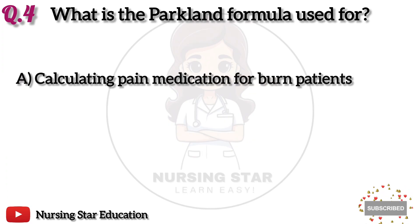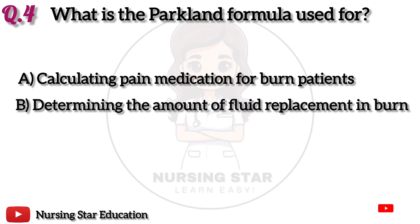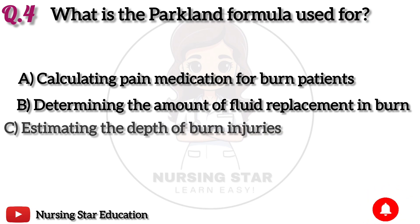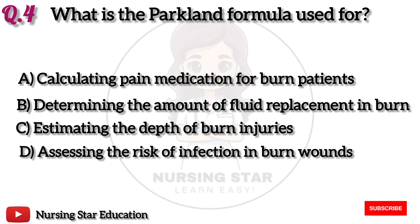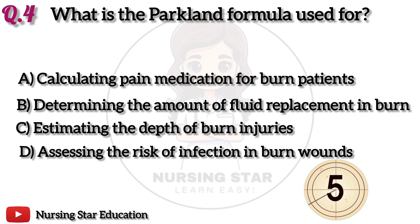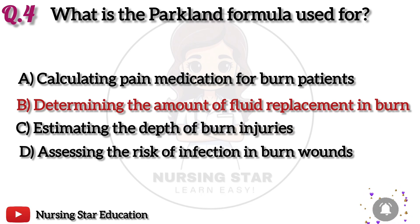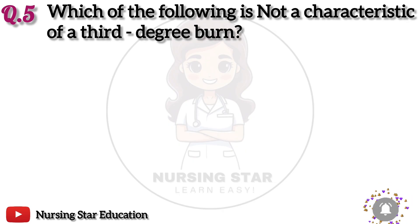Question 4: What is the Parkland formula used for? Option A: Calculating pain medication for burn patients. B: Determining the amount of fluid replacement in burns. C: Estimating the depth of burn injuries. D: Assessing the risk of infection in burn wounds. The correct answer is B: Determining the amount of fluid replacement in burns.